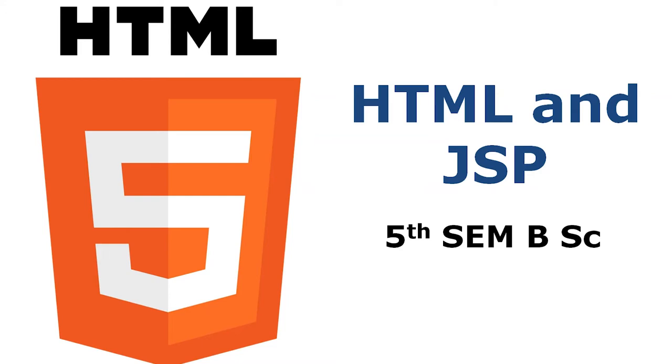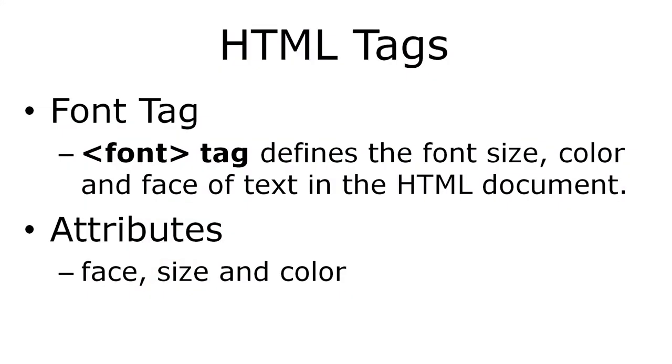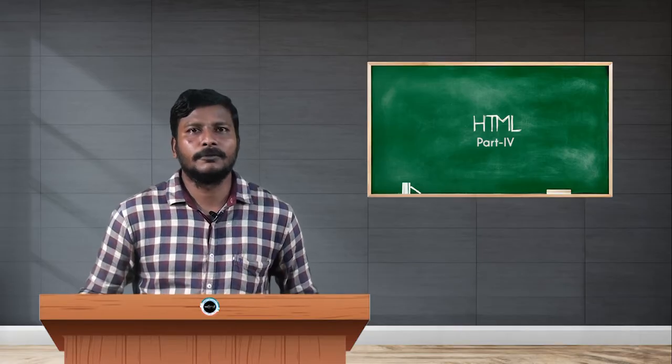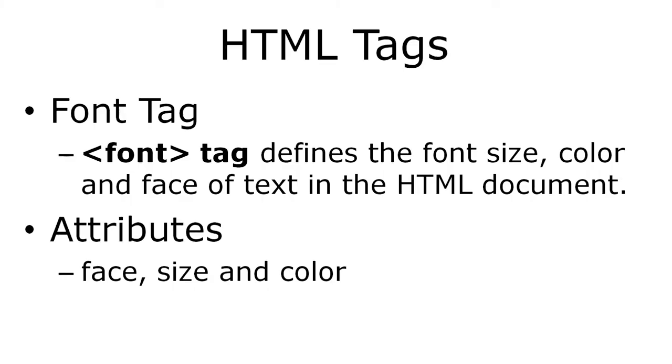First we will see about the font tag. The font tag is normally used to define the font size, color, and face of text in your HTML document. We already discussed the body tag, which has an attribute called 'text' that is used to give font color to the entire document. If you want to specify a specific font, size, and color to a particular part of your document, then you use the font tag. By default, the browser uses its own default font size and color, and using the font tag you can change those attributes.